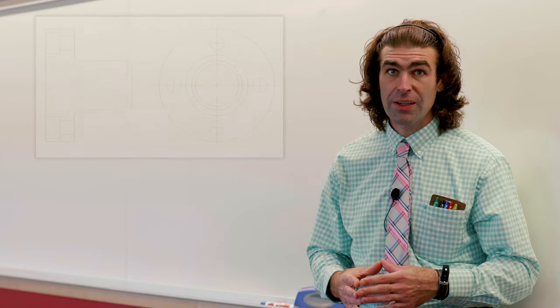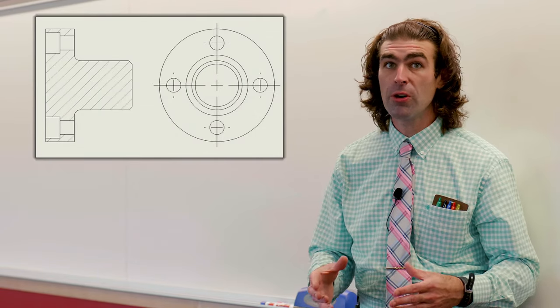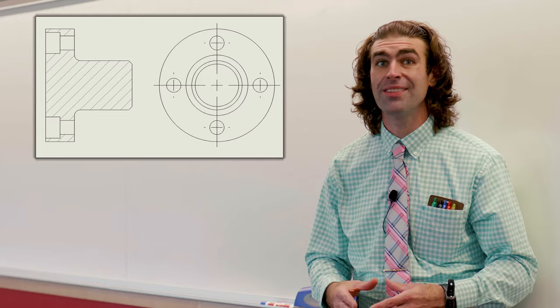We'll start with the full section. The full section is used when you have a symmetric part and then the section view is in projection.